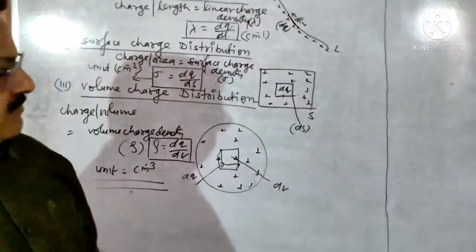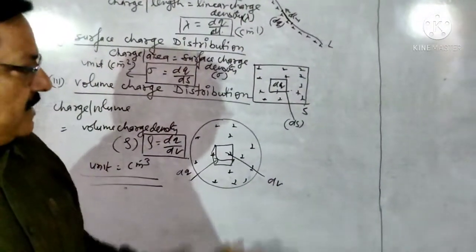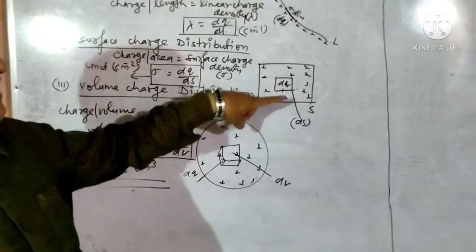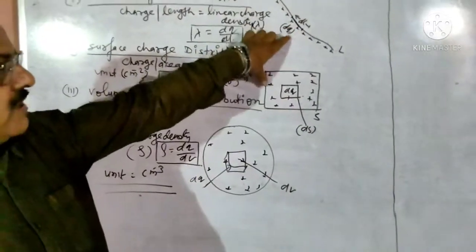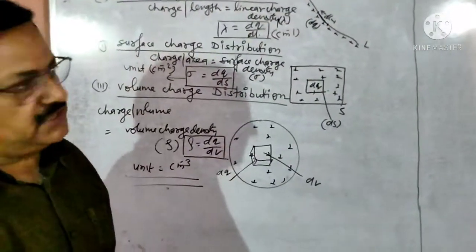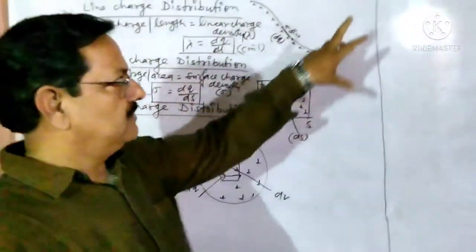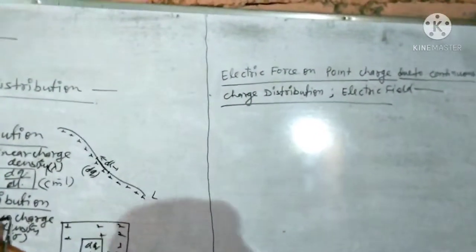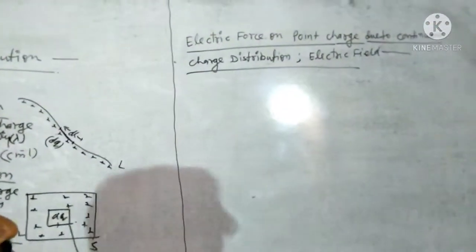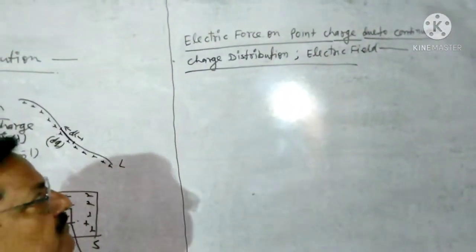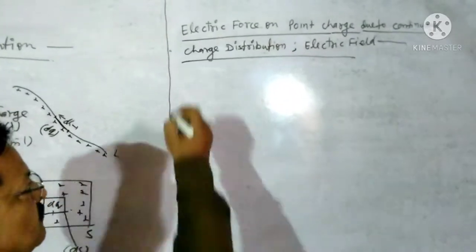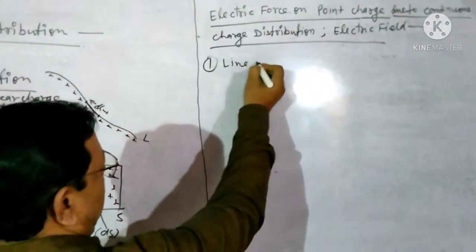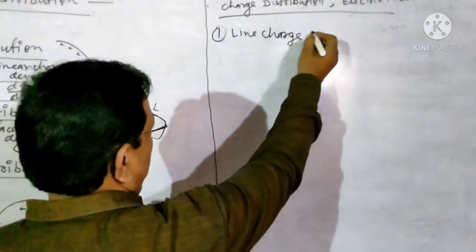So these are the three types of continuous charge distribution. Now we have to derive the formula for electric force and electric field due to all three types of continuous charge distribution — line charge distribution, surface charge distribution, and volume charge distribution.